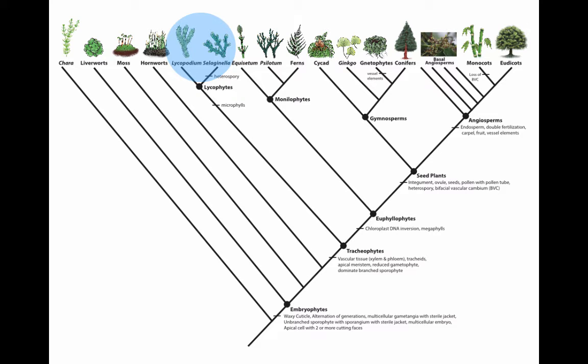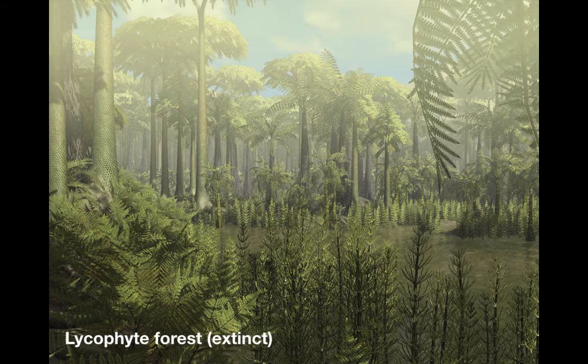They don't have a huge amount of taxonomy within them. There are three families, about five genera, and maybe about 1,200 plus species that are living — extant plants. But the interesting thing is that there are an equal or maybe even a greater number of extinct taxa.